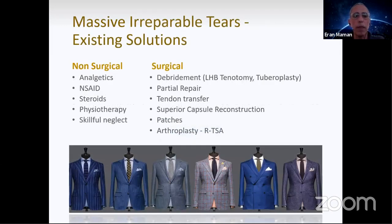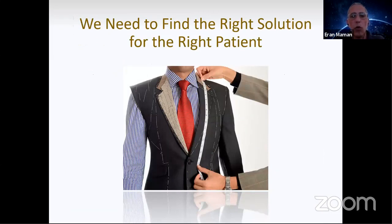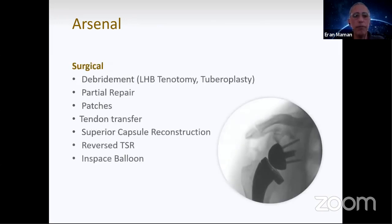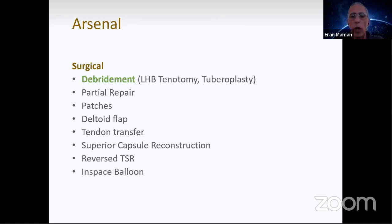Let's presume we got to the point that we decided this is irreparable for me as a surgeon. So what are my solutions? We have non-surgical and surgical solutions. Non-surgical includes physiotherapy, anti-inflammatory drugs, steroids, painkillers, or skillful neglect. Surgical solutions include debridement with or without biceps tenotomy or tenodesis, tuberoplasty, partial repairs, option patches, tendon transfers, superior capsular reconstruction, the reverse, and the in-space balloon.